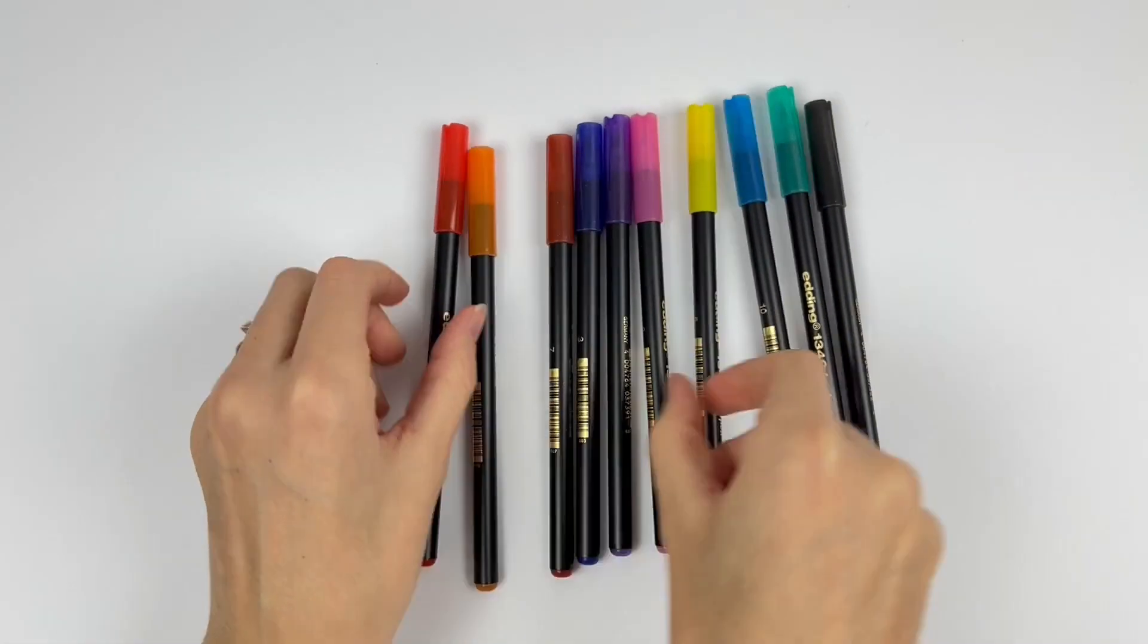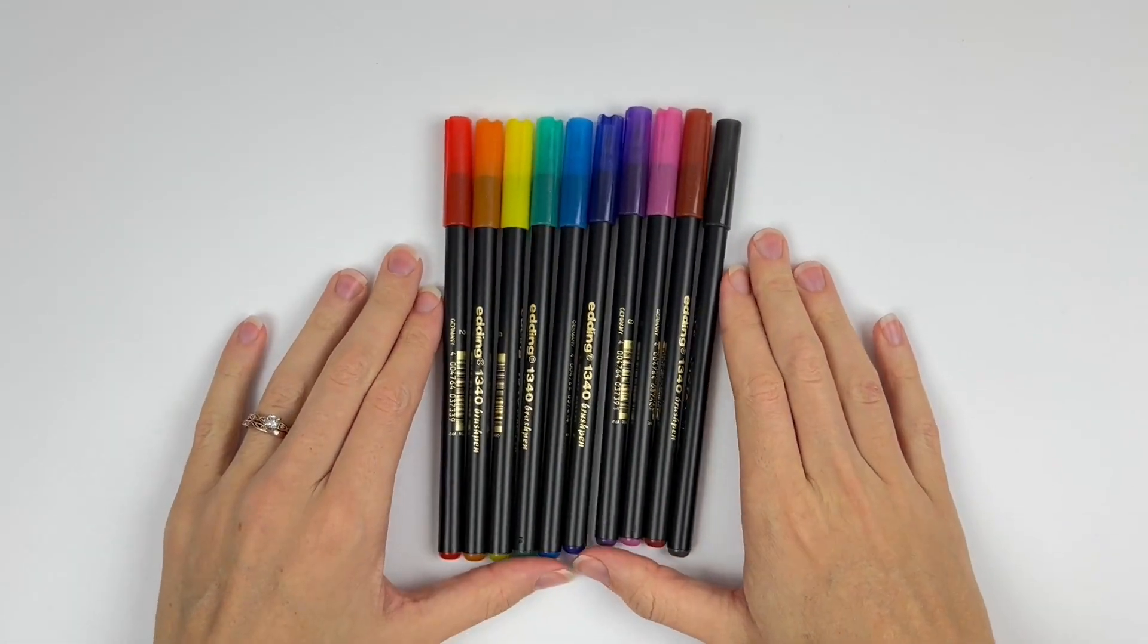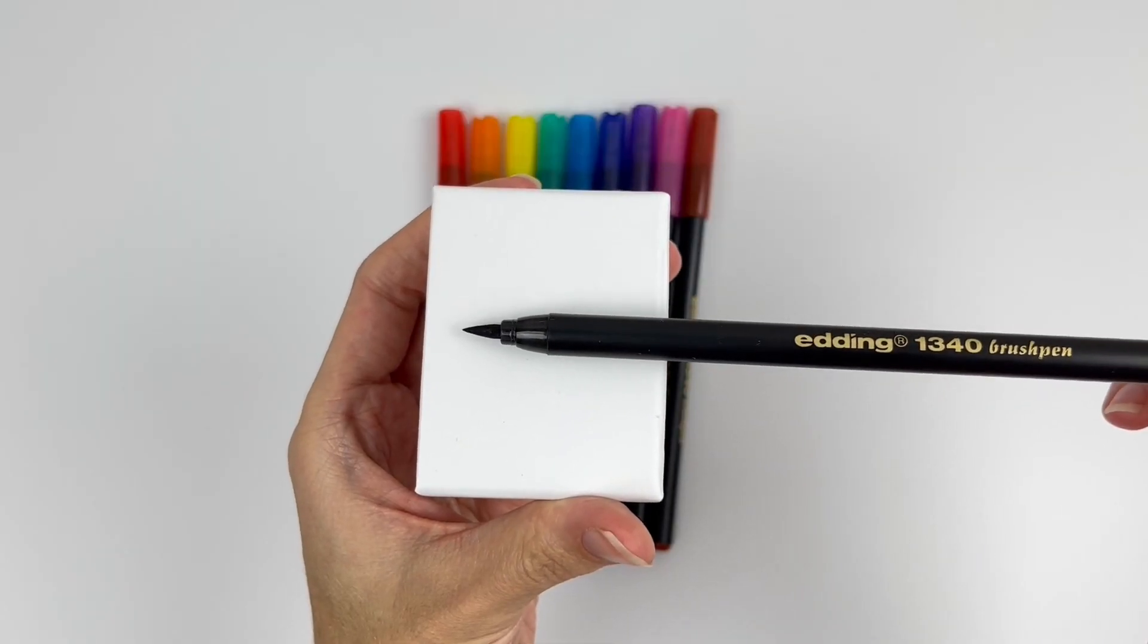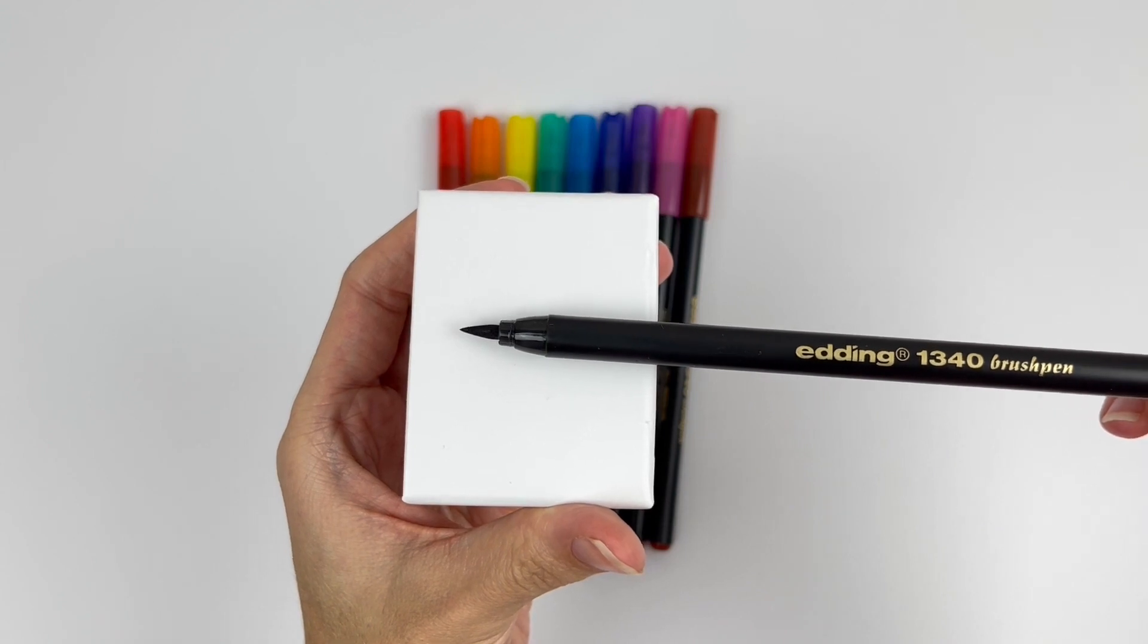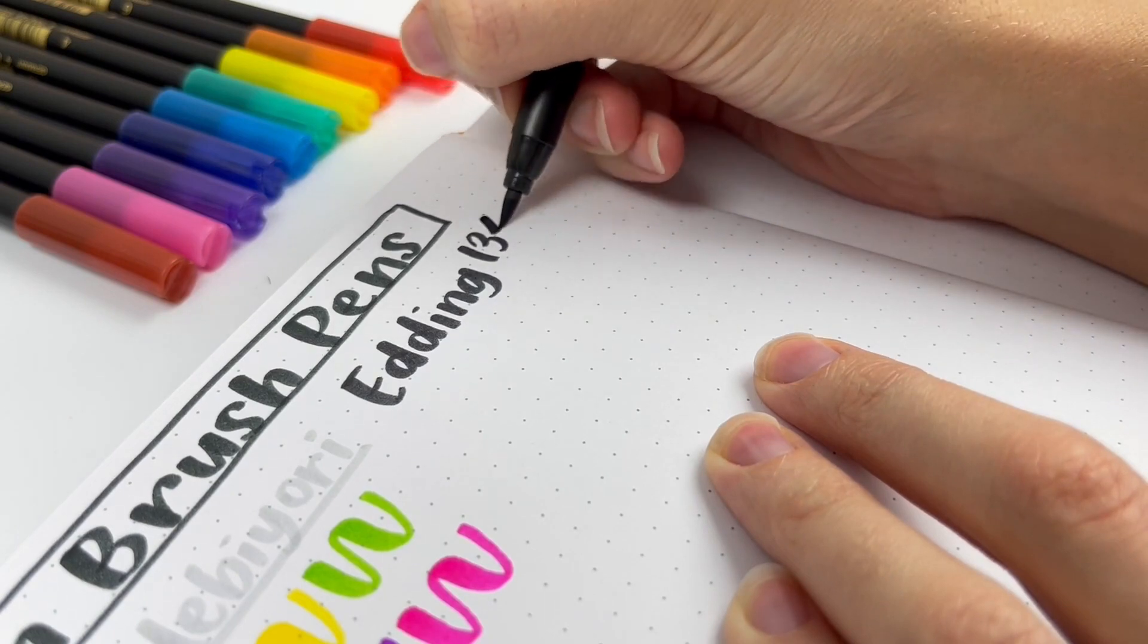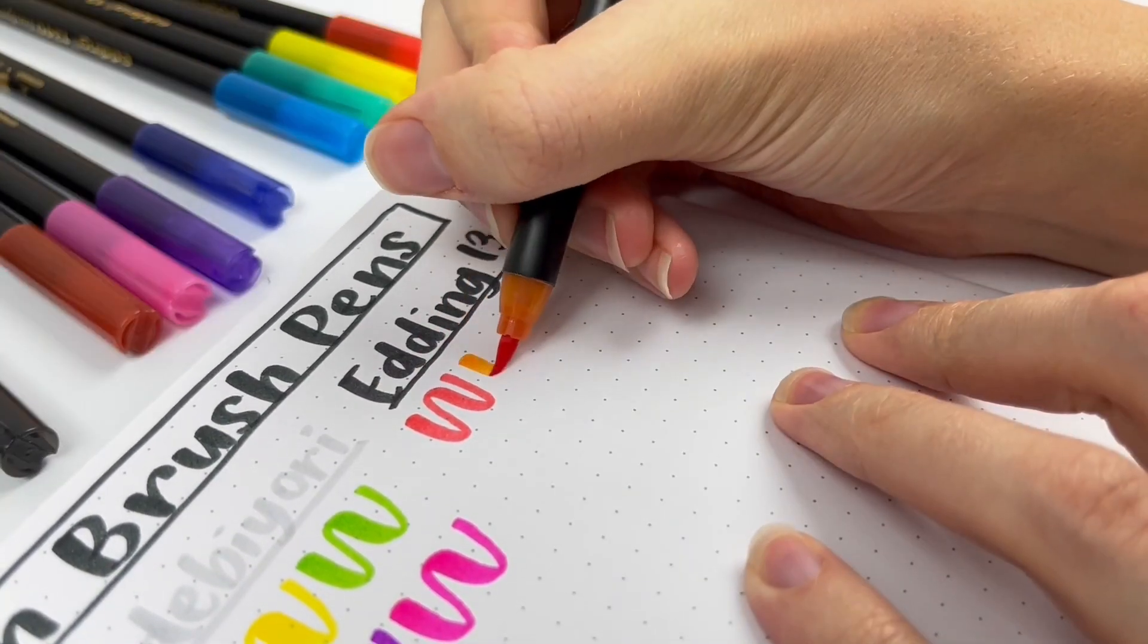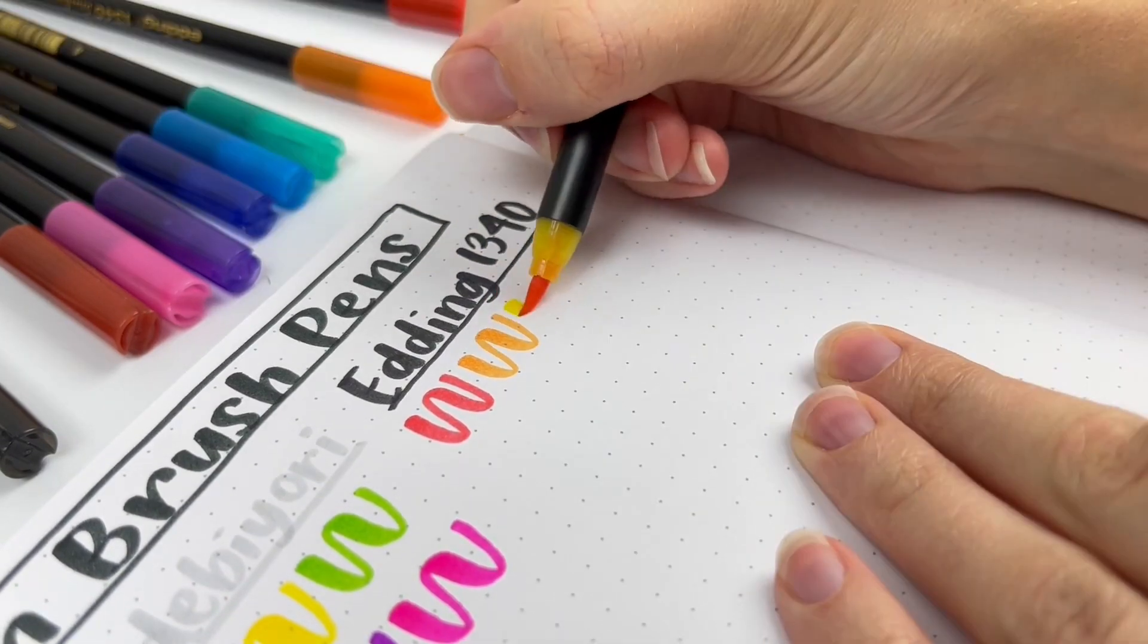Next are Edding 1340 Brush Pens. These ones are from Germany, but I found them on Amazon. I think I heard about these from someone on my international pen video. These are so great. The bounce is really good quality, and the tip is a nice firm tip that feels like it won't fray right when you use it. I definitely recommend these if they're easy for you to find.